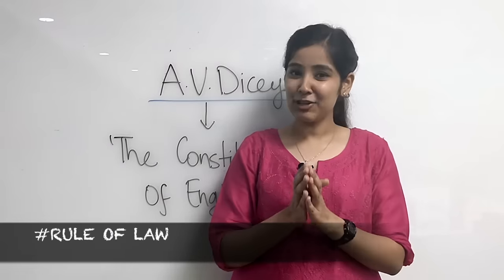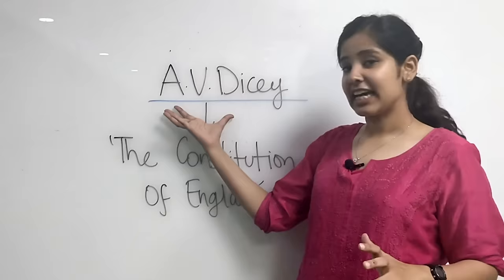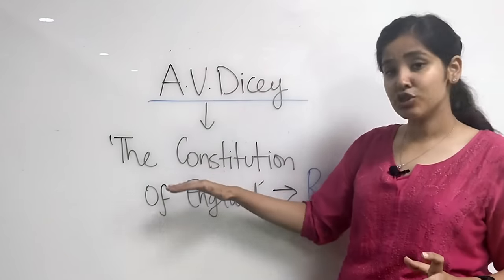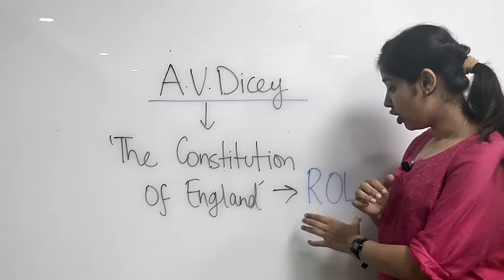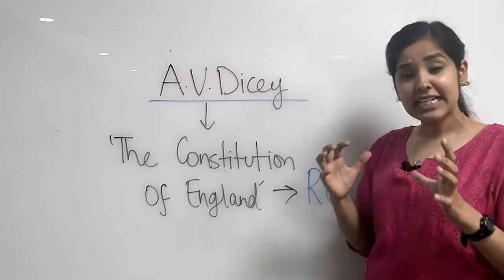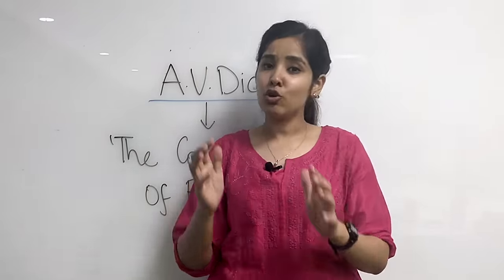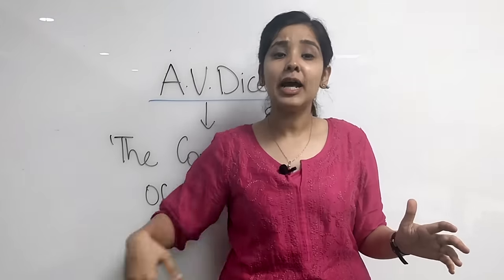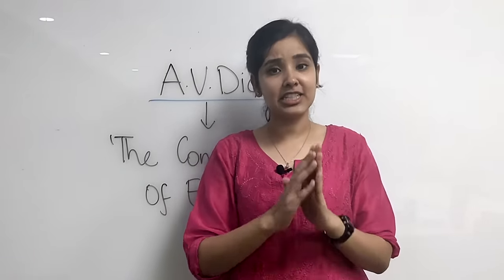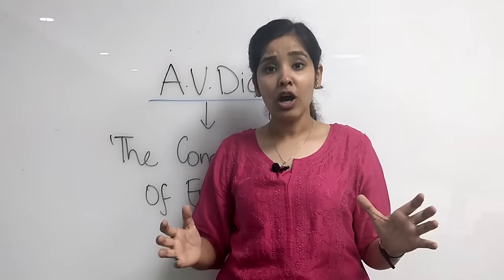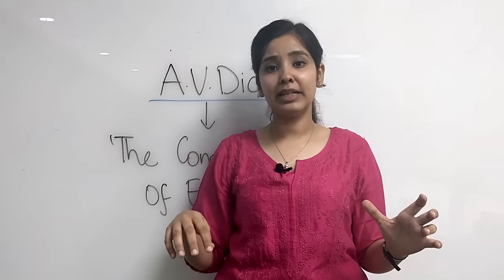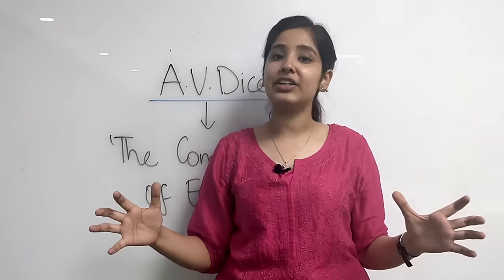Let's start with the rule of law. A.V. Dicey developed his book, The Constitution of England, the rule of law concept. According to this, whether you are me, Prime Minister, Constable or Clerk, if we have any kind of act that is not legally justified, then we will have the same responsibility and treat each other.